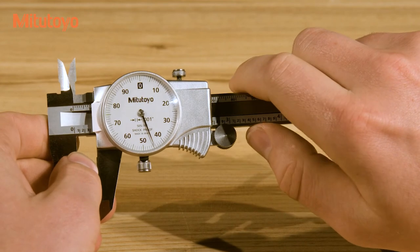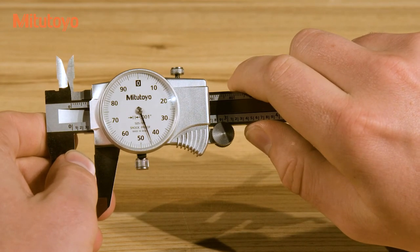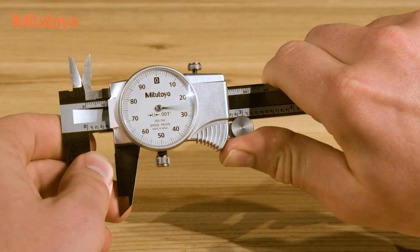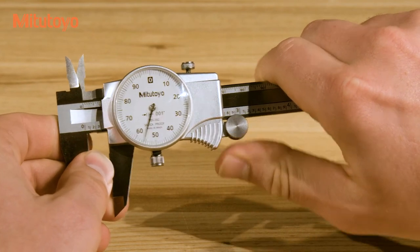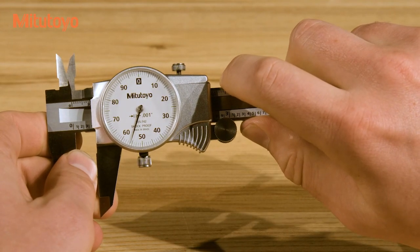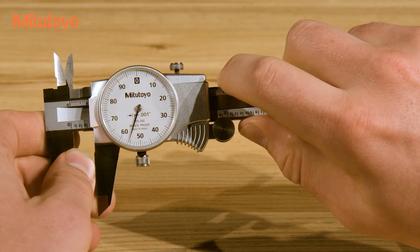If there's confusion about whether or not a graduation has been passed, note that the value on the dial increases as the caliper opens. So if the value is high, then the graduation has not yet been passed, and if the value is low, it has just been passed.